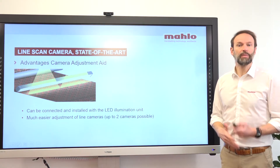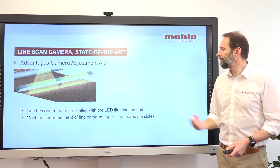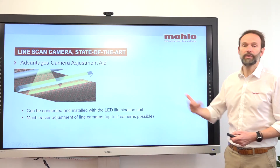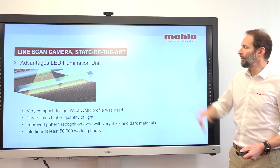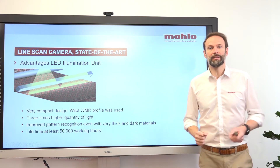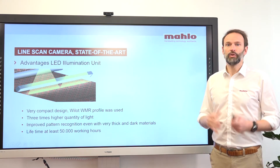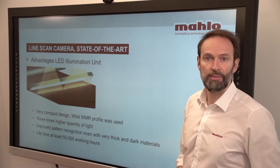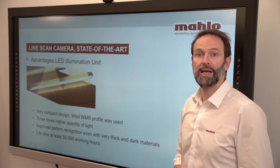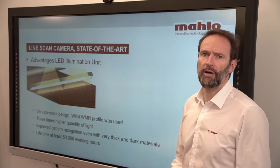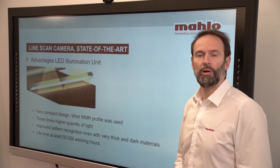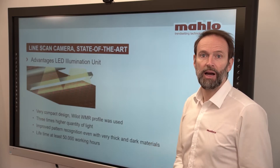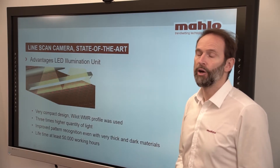Every camera needs light — the more the better. We have a very strong LED illumination unit. One illumination unit serves two cameras, and the quantity of light is three times higher than normal light. On top of that, it saves electricity because power consumption is lower than with normal light. The standby time is 50,000 hours, so very little maintenance hassle, hardly any replacement due to high durability and very long stand time — no issues with maintenance whatsoever.